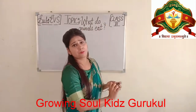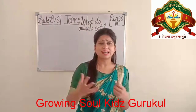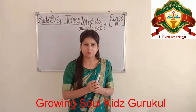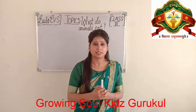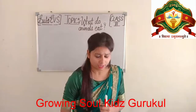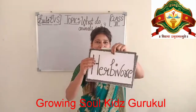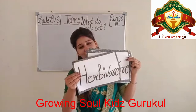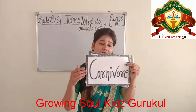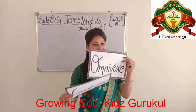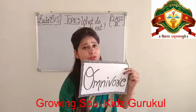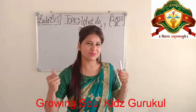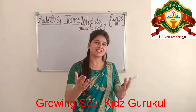My dear students, animals are mainly classified into three groups by what they eat. They are: herbivore, carnivore, and omnivore animals. Let us discuss about these three types.